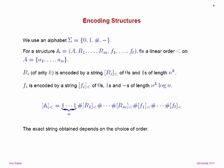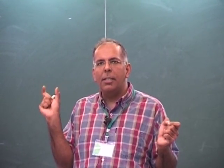I'll make the encoding explicit. Say we have a structure A consisting of a universe A, relations R1 to RM, and functions F1 to FL. Once we fix a linear order on the universe A, any relation of arity K can be expressed as a bit string of length N to the K — because the ordering induces a lexicographic ordering of K-tuples, and for each K-tuple there's one bit indicating membership. Any function of arity K can be encoded by a bit string of length N^K times log N.